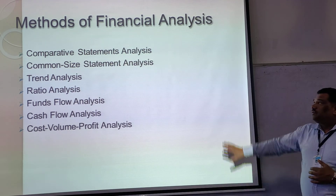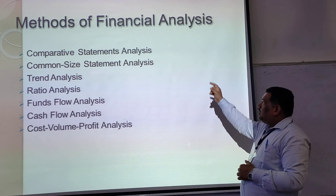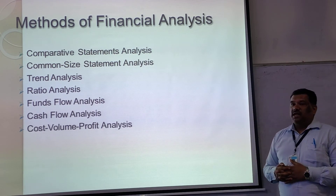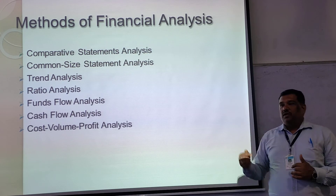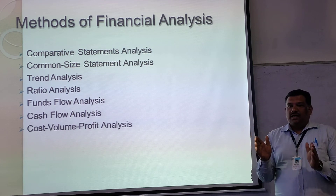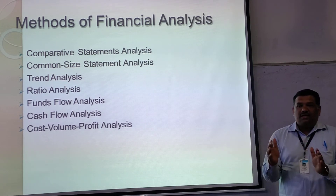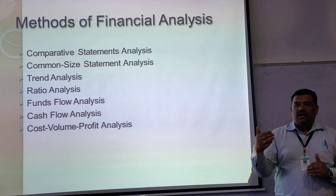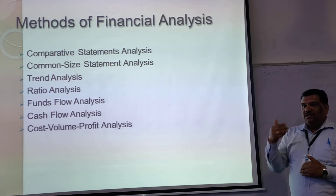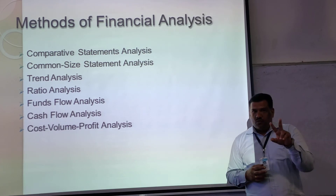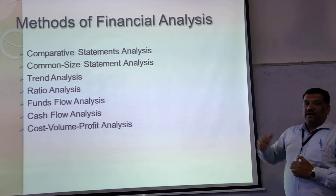These are snapshots of the different methods of financial analysis. First is comparative statement analysis — which is horizontal analysis — where an income statement and balance sheet of two periods are compared in terms of both amount and percentage. Next is common size statement analysis, which is of two types: common size income statement and common size balance sheet. Third is trend analysis, which is a time series analysis.